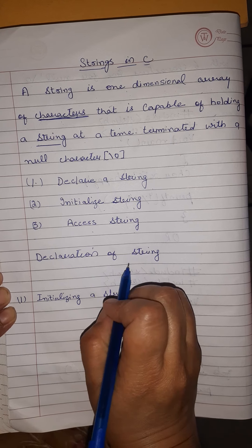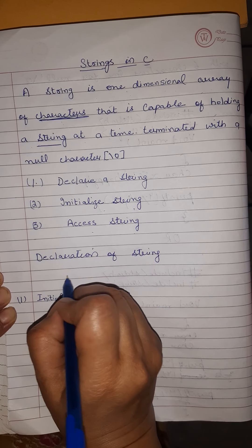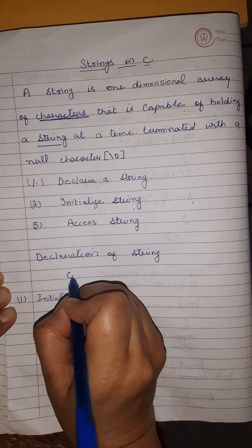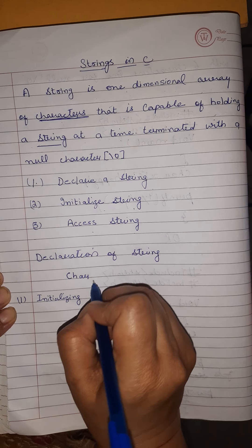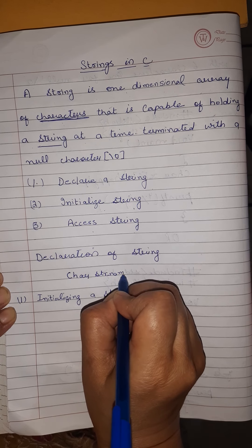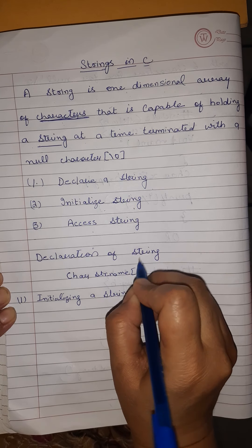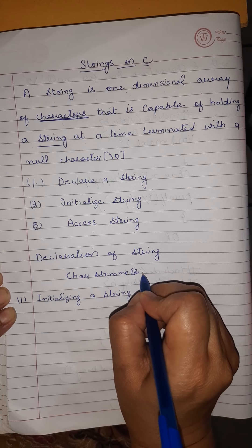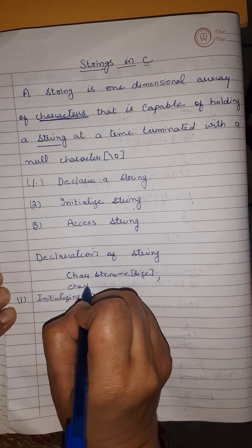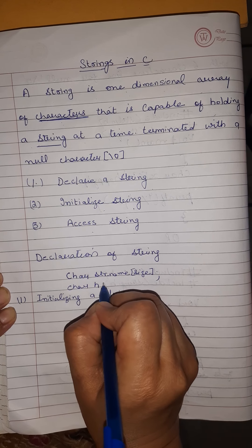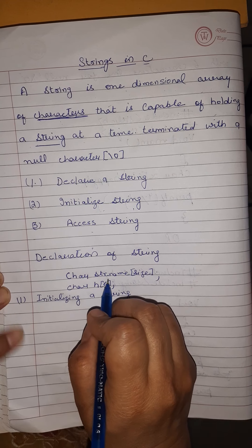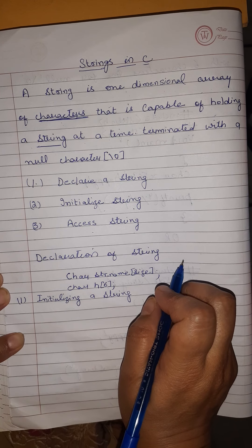First of all, how to declare a string. We can declare a string like this: char, then the string name, then the size, then a semicolon. For example, char h[6]. This is the method to declare a string.